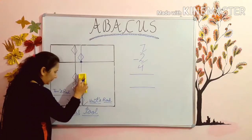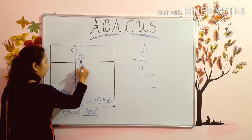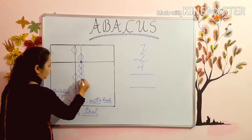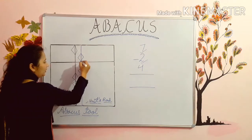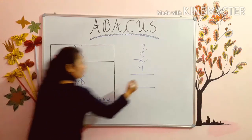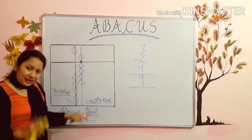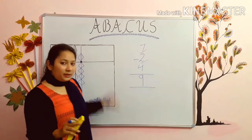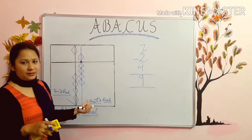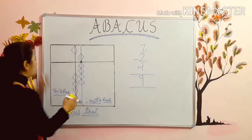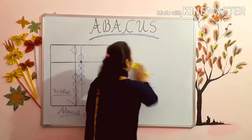Kids, see here. What is your answer? Count — 5, 6, 7, 8, 9. So 9 is your answer. See kids, it is taking time because you were not aware of the beads. But if you will practice it again and again, then you will get the sums and the tool work also. In this rod, we have not done anything, so it will remain as it is. Now we will move to our next sum.